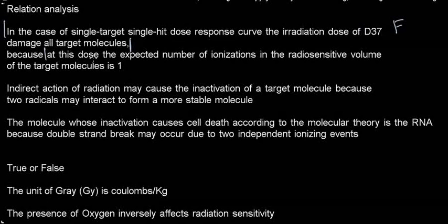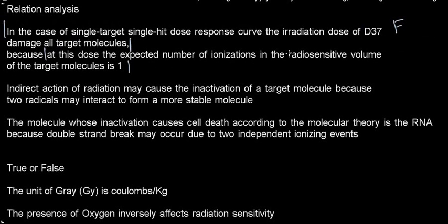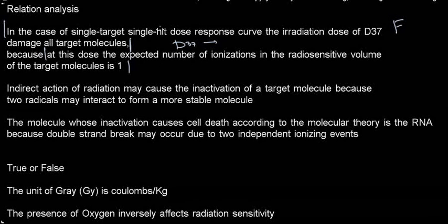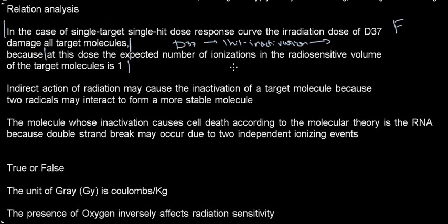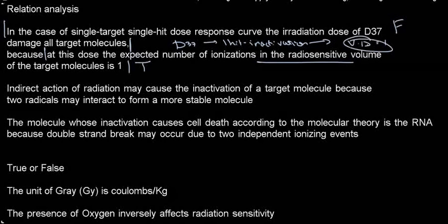The second statement: at this dose, the expected number of ionizations in the radio-sensitive volume of the target molecule is one. I find it easier to just remember that D37 applied in the case of one hit causes inactivation — it corresponds to one hit in the radio-sensitive volume, represented as V·D equals one in the case of D37. One hit causes inactivation, so this is true.